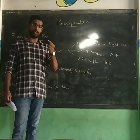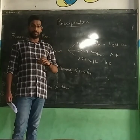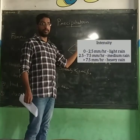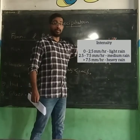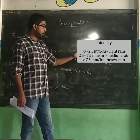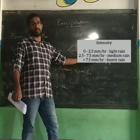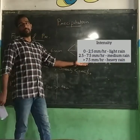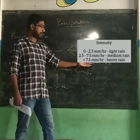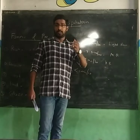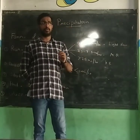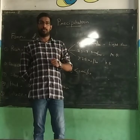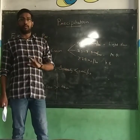Within this range, we classify rain by intensity. Light rain has an intensity of 0 to 2.5mm per hour. Medium rain ranges from 2.5 to 7.5mm per hour. Heavy rain has an intensity greater than 7.5mm per hour. This is the classification of light, medium, and heavy rain.